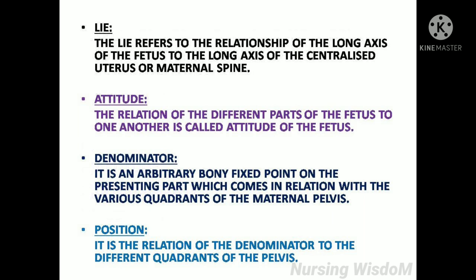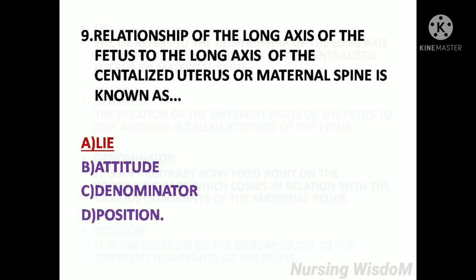Lie refers to the relationship of the long axis of the fetus to the long axis of the uterus or maternal spine. Attitude is the relation of the different parts of the fetus to one another. Denominator is an arbitrary bony fixed point on the presenting part which relates to various quadrants of the maternal pelvis. Position is the relation of the denominator to the different quadrants of the pelvis. So the answer is Option A: Lie.